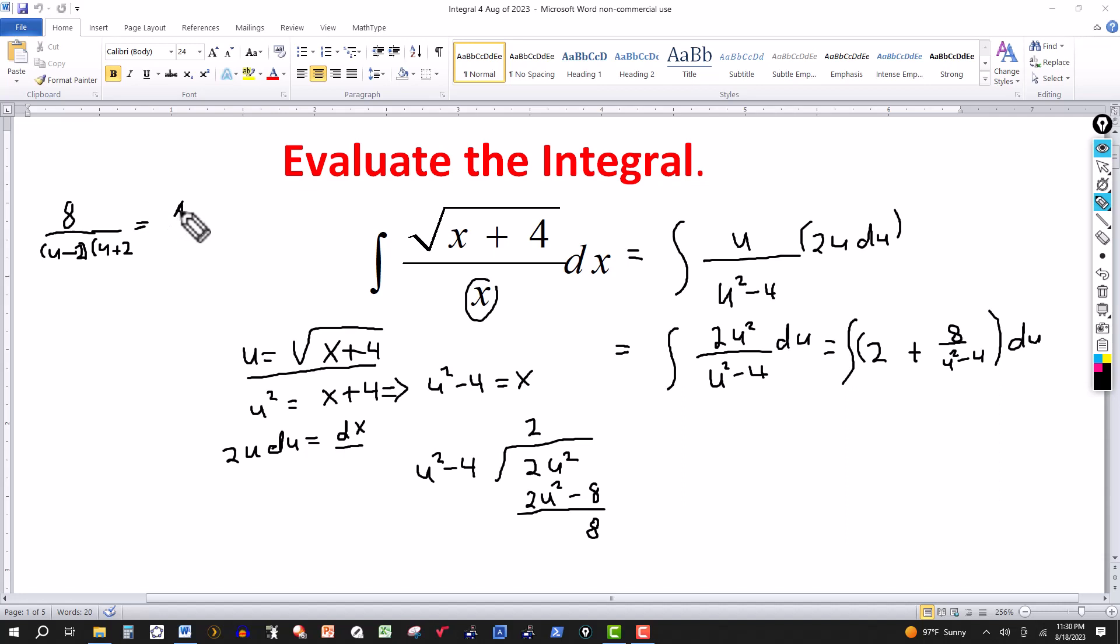A over, I have two non-repeated linear factors, so this would be u minus 2, and then plus another constant, B over u plus 2.